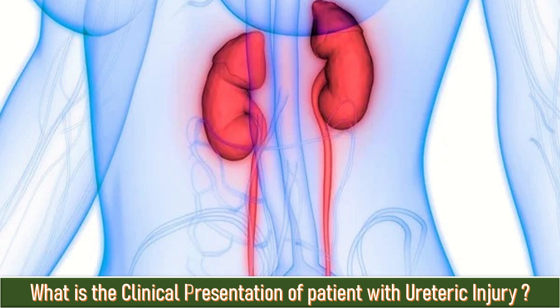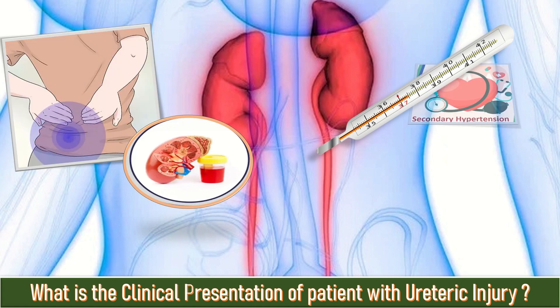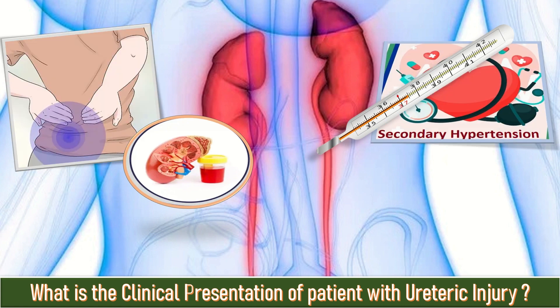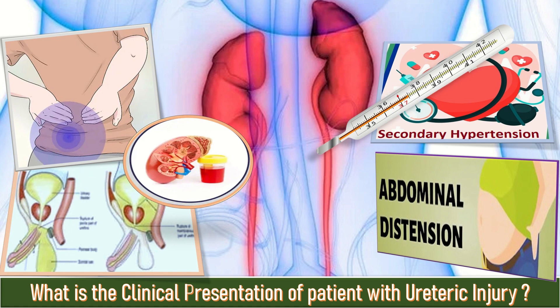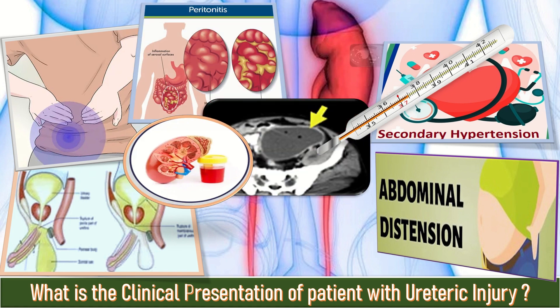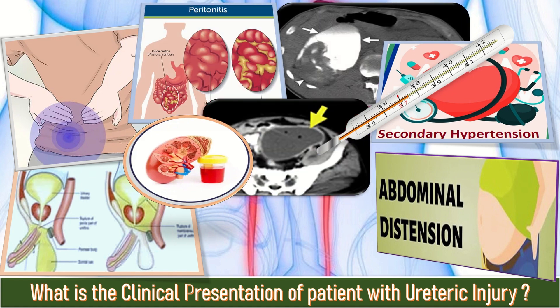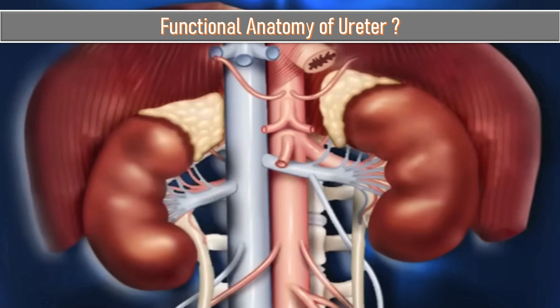What is the clinical presentation of a patient with ureteric injury? The clinical signs and symptoms include: fever, hematuria, flank pain, secondary hypertension, abdominal distension, urinary leakage, abscess formation, peritonitis, retroperitoneal urinoma, and post-operative anuria.